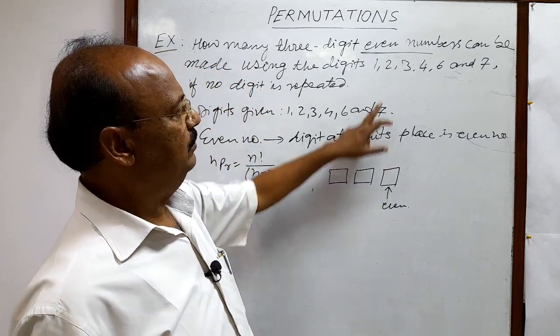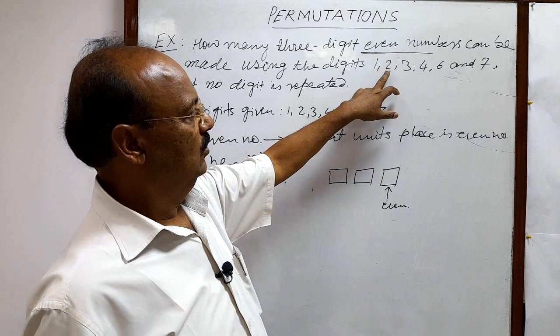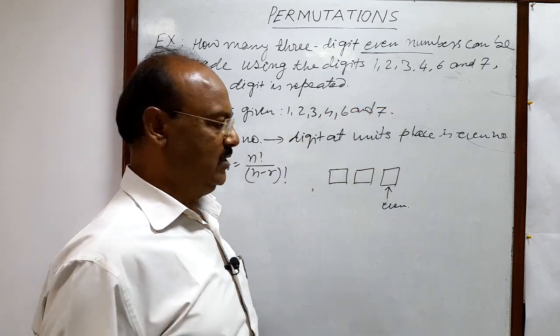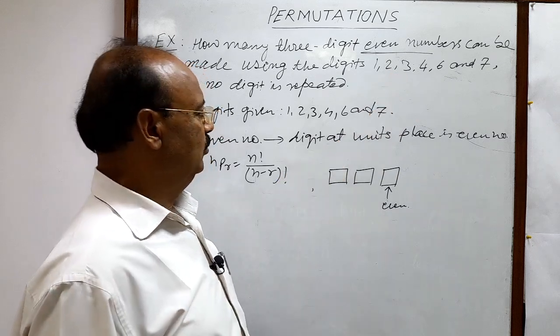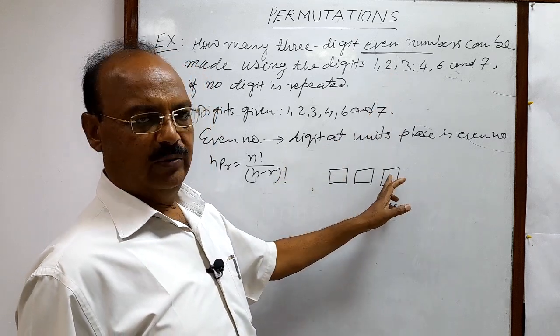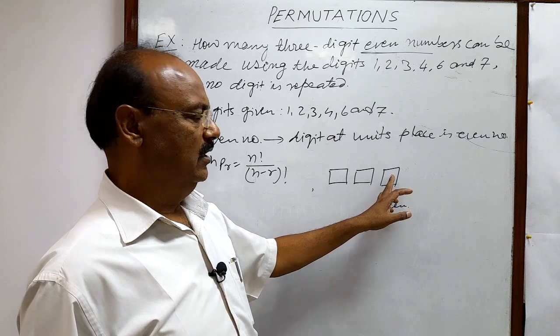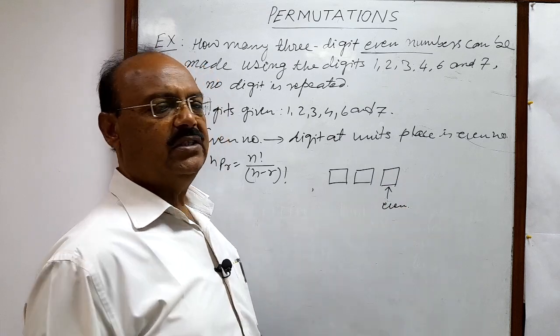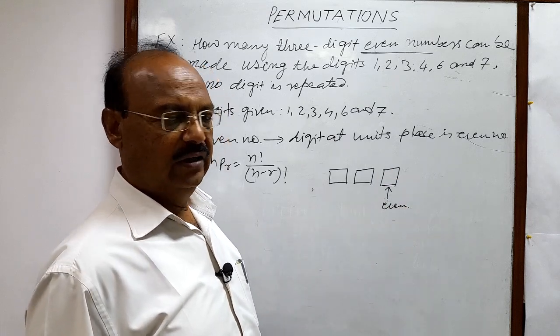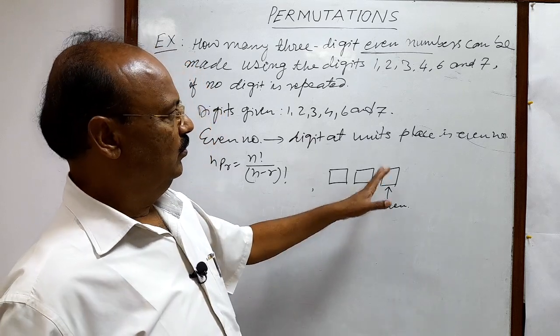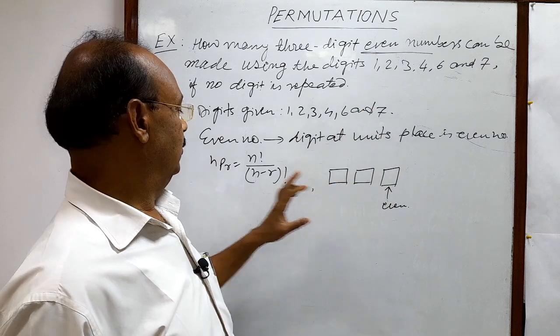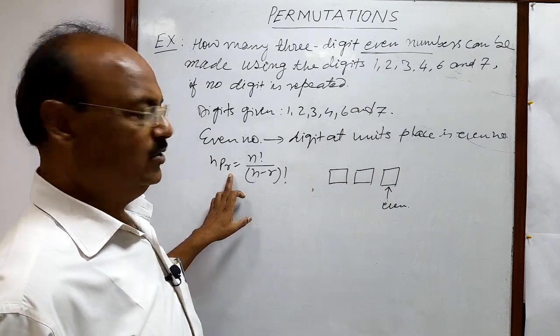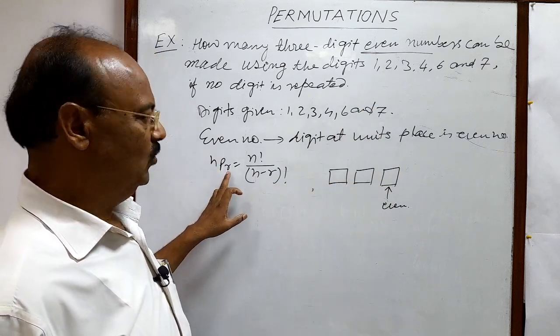And how many even numbers we have here? 1, 2, 3 even numbers. So out of these three even numbers, we have to select any one number for this place, for units place. That can be selected in how many ways? 3P1. Because we are having total even numbers is three and we have to select one. So N is equal to three and R is equal to one.